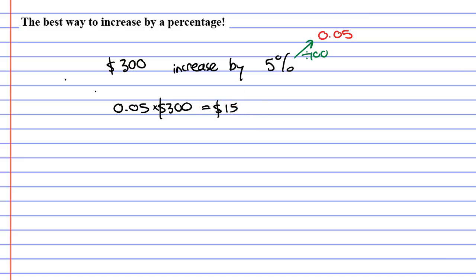0.05 times 300 equals 15. So we get a value of $15. So if we are increasing by this amount, then we take our $300, we increase it by the $15. And we now have $315. Now, the problem with this method I've just shown you is it takes two steps.